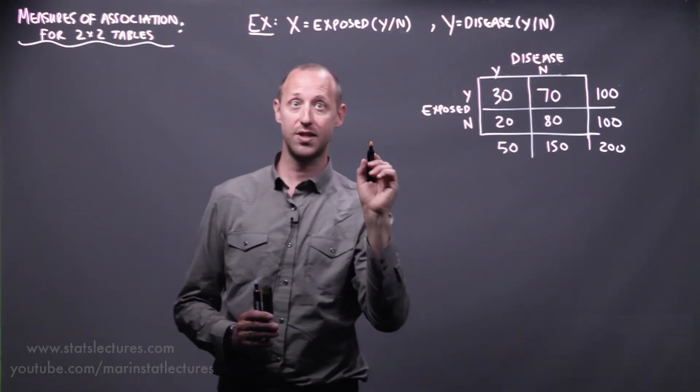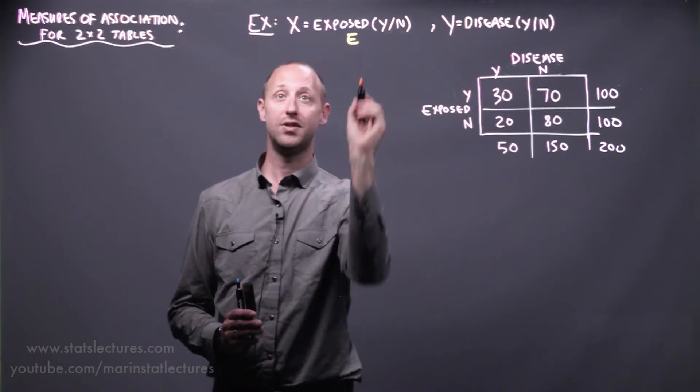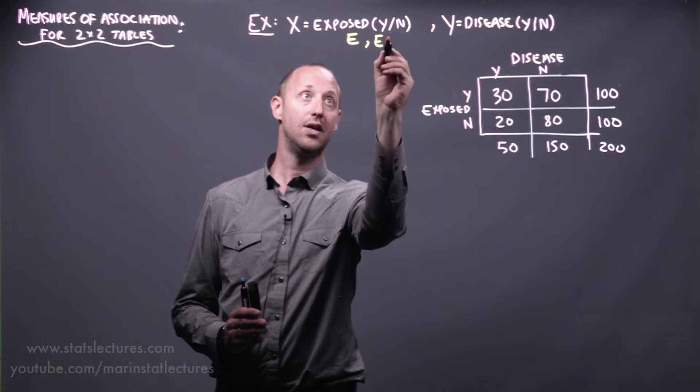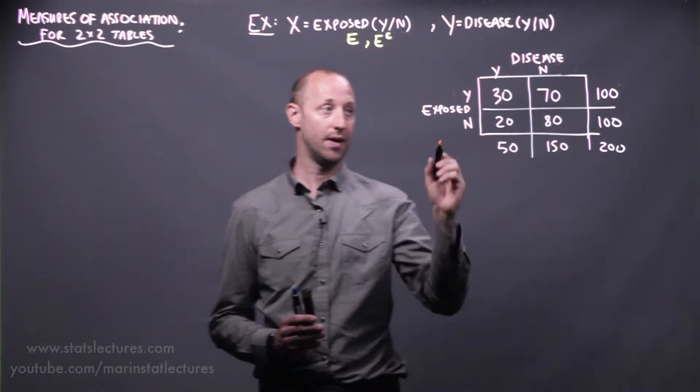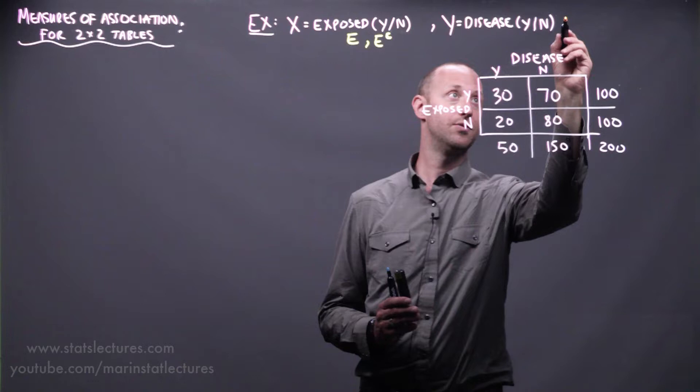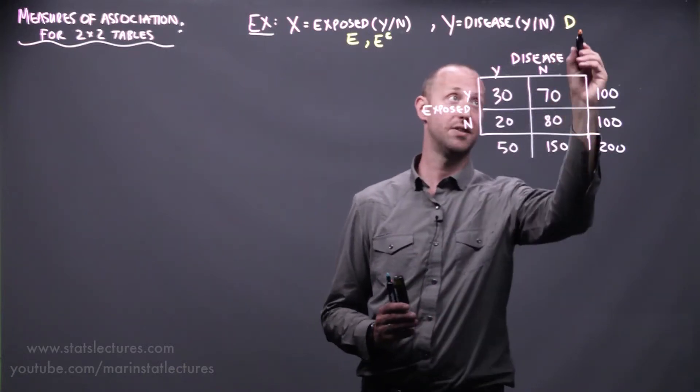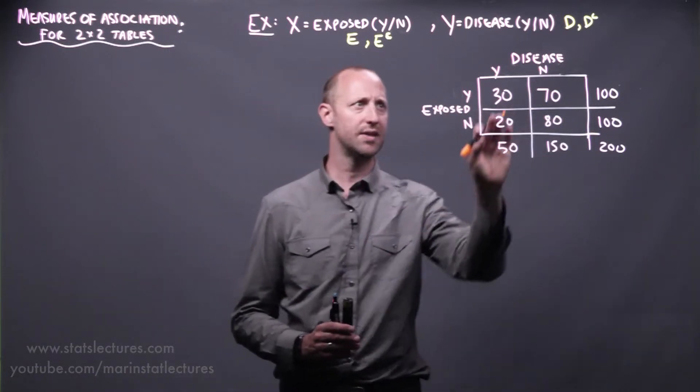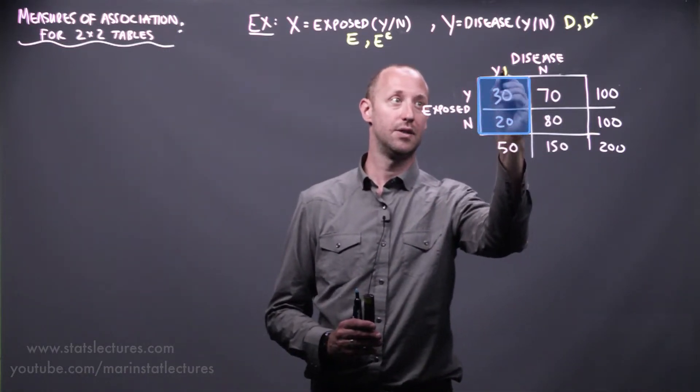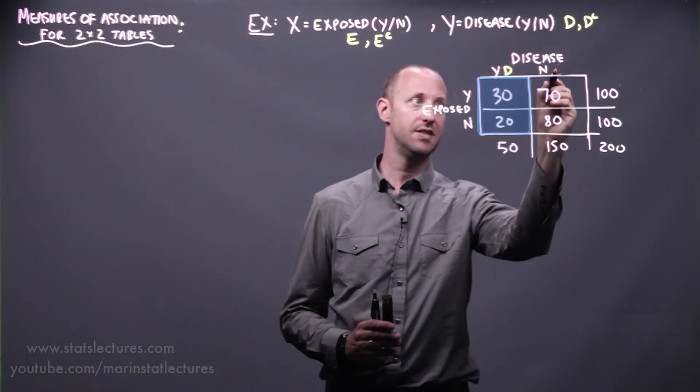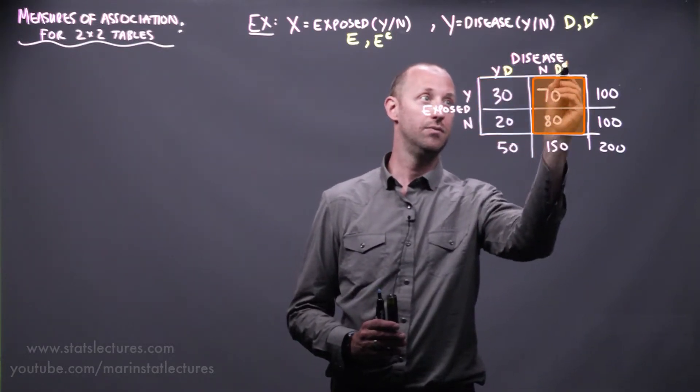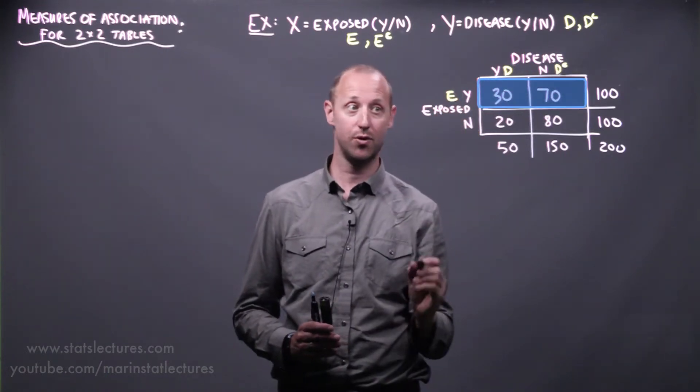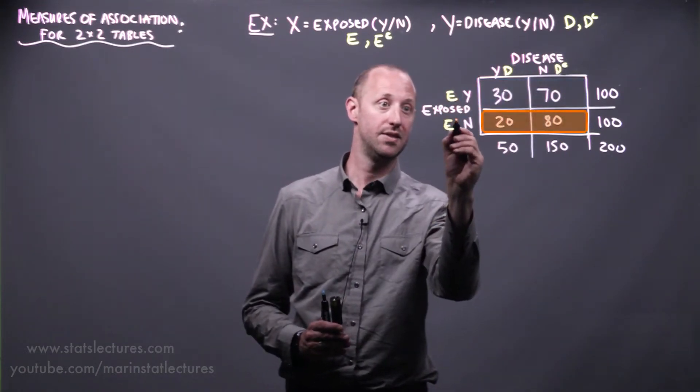With exposed, the notation that I'm going to use is I'm going to use e to represent an individual who's exposed and e complement for someone who's not exposed. And for disease status, I'm going to use d to represent someone who has the disease and d complement for someone who does not have the disease. Looking at the table here, we can label this column as being the column with those who have the disease and those who do not, and this row as the individuals who have the exposure and those who are not.